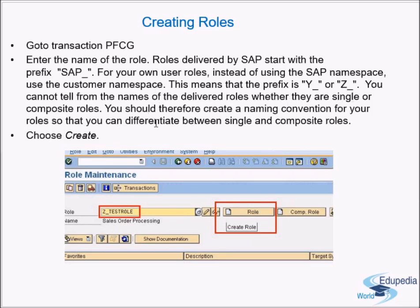In the customer namespace we have Y underscore and C underscore. You cannot tell from the names of delivered roles whether they are single or composite roles. You should therefore create a naming convention for your roles so you can differentiate between single and composite roles. A composite role is nothing but a collection of single roles.